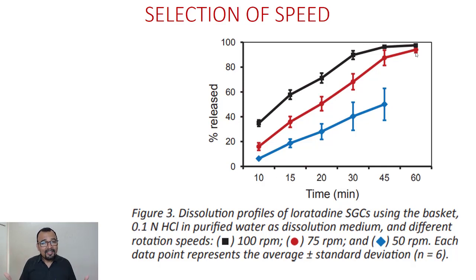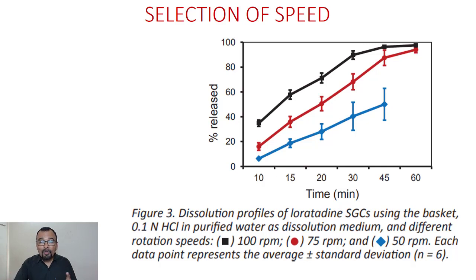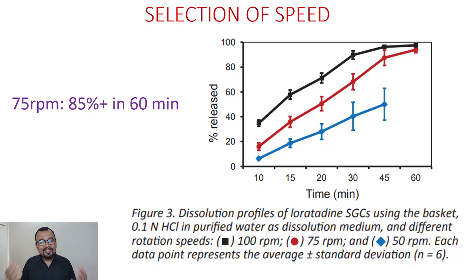It is always good to select a speed that avoids over-release, because higher speeds can mask smaller differences between formulation prototypes. At 75 rpm, there is a better discrimination compared to 100 rpm. Therefore, the wise decision is to select 75 rpm with the basket as our choice of speed.